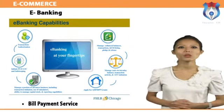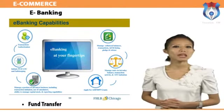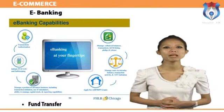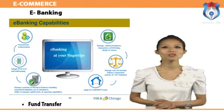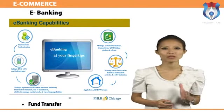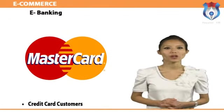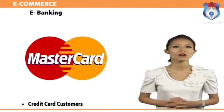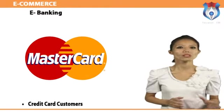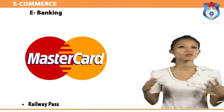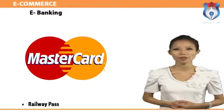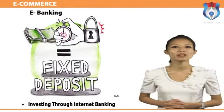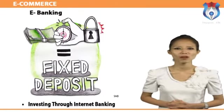Each bank has tie-ups with various utility companies, service providers, and insurance companies across the country. One can facilitate payment of electricity and telephone bills, mobile phone, credit card, and insurance premium bills. One can transfer any amount from one account to another of the same or any other bank. Customers can send money anywhere in India. Once logged into the account, only need to mention the payee's account number, his bank, and the branch. The transfer will take place in a day or so, whereas in a traditional method it takes about three working days. Credit card users have a lot in store with internet banking. Customers can not only pay credit card bills online but also get a loan on their cards. Not just this, they can also apply for an additional card, request a credit line increase, and, God forbid, if one loses the credit card, one can report a lost card online. Indian railways has tied up with ICICI Bank and can now make railway passes for local trains online. Opening a fixed deposit account cannot get easier than this. One can now open an FD online through funds transfer. Online banking can also be a great friend for lazy investors.